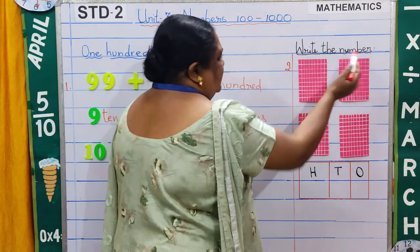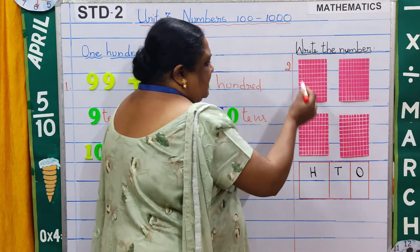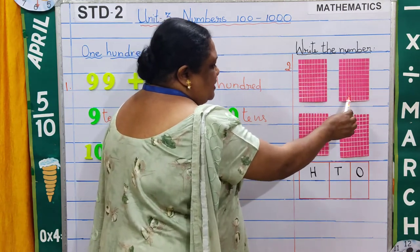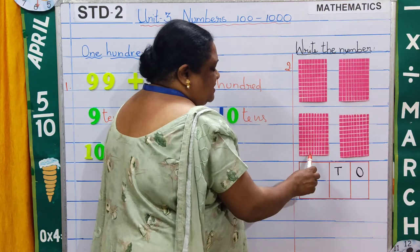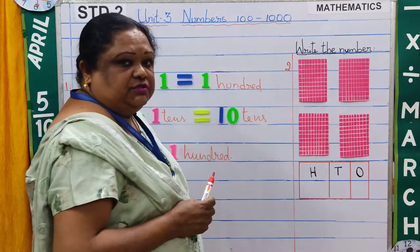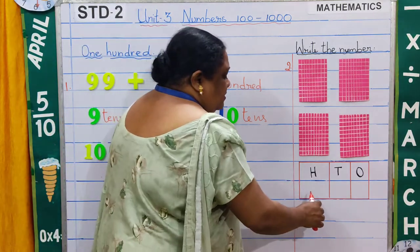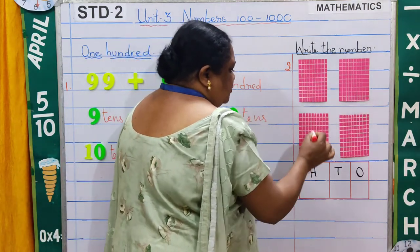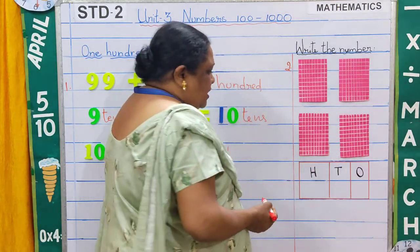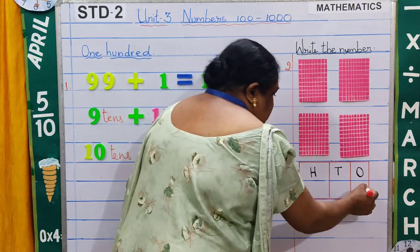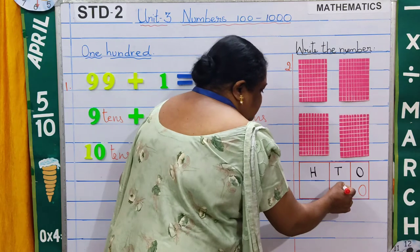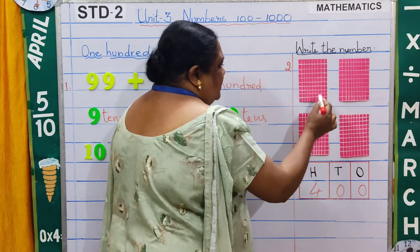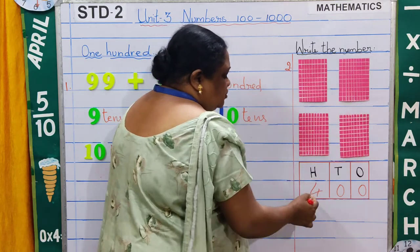Coming to number 2 — write the number. We have 4 boxes here and each box has 100 squares. The first box has 100 squares, the second one has 100 squares, the third also has 100 squares and the fourth also has 100 squares. So these are 100, 200, 300 and 400. We write: 0 ones, 0 tens and 4 hundreds. The number is 400.